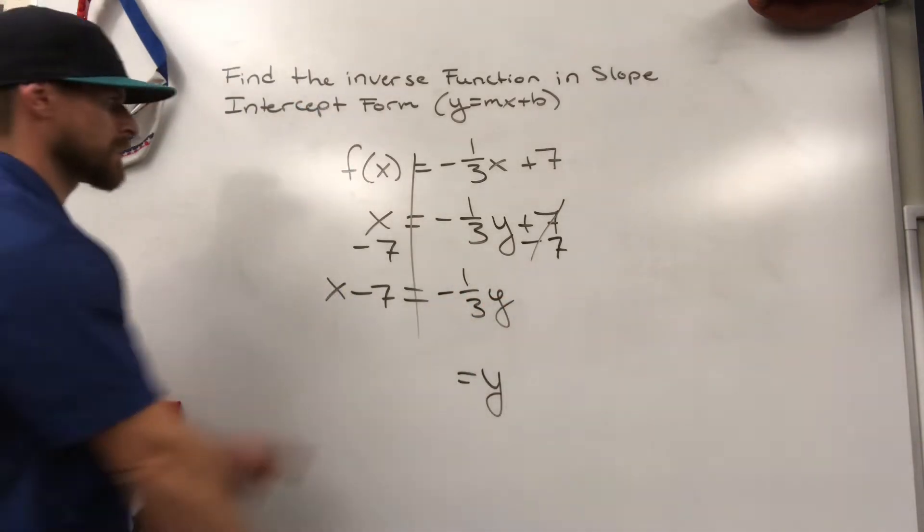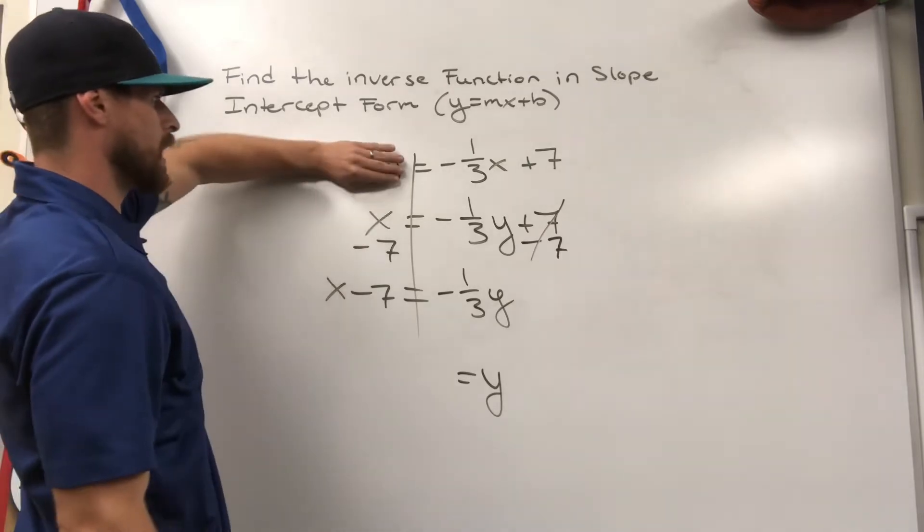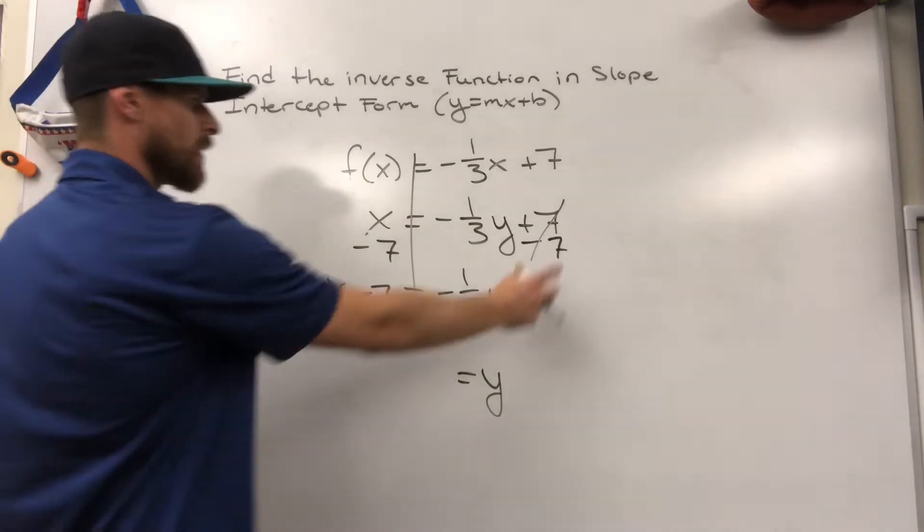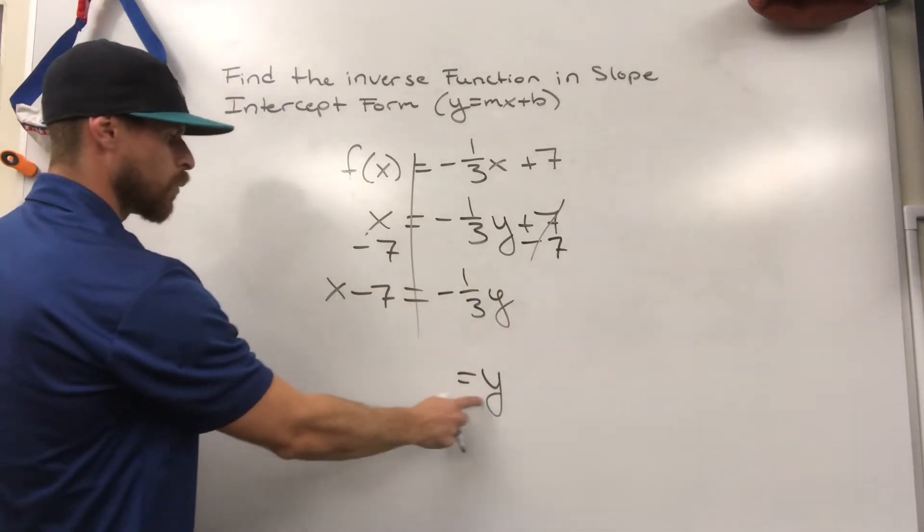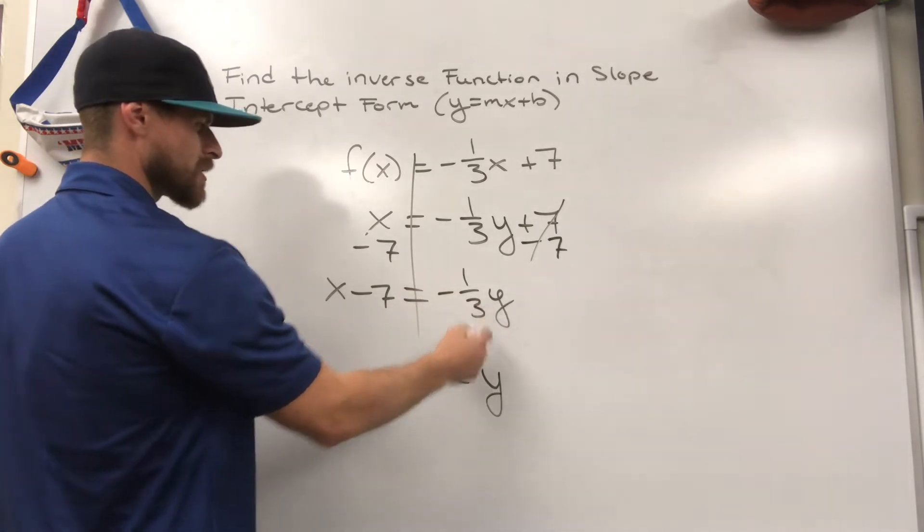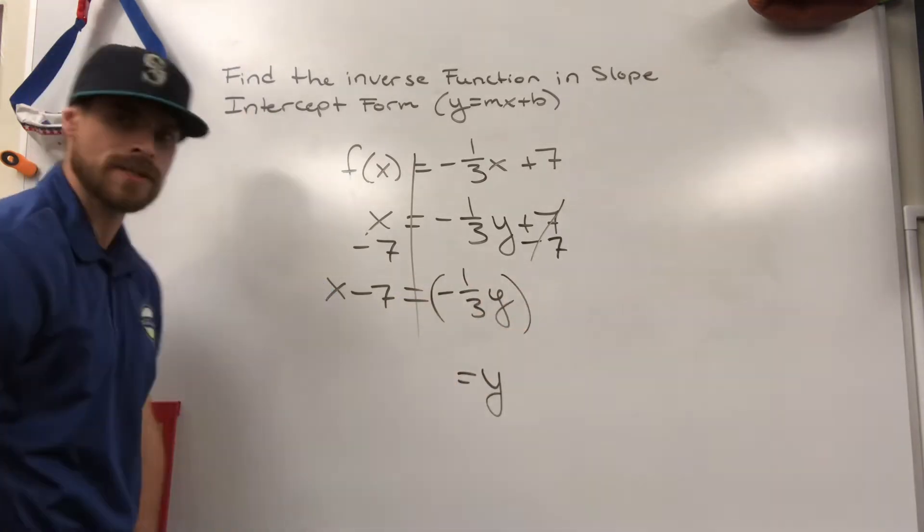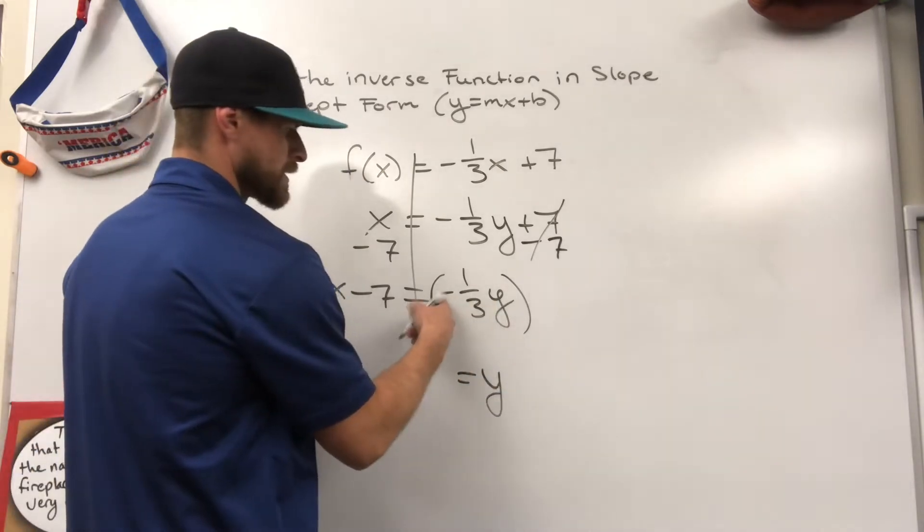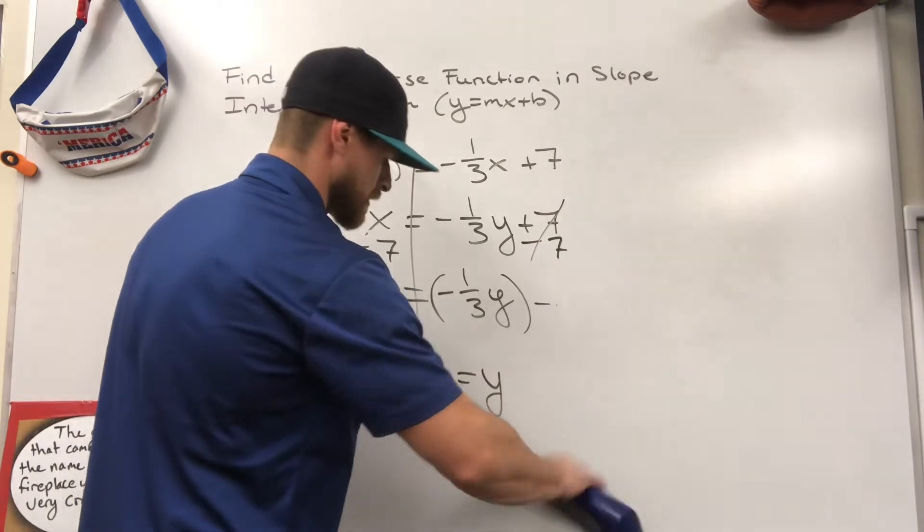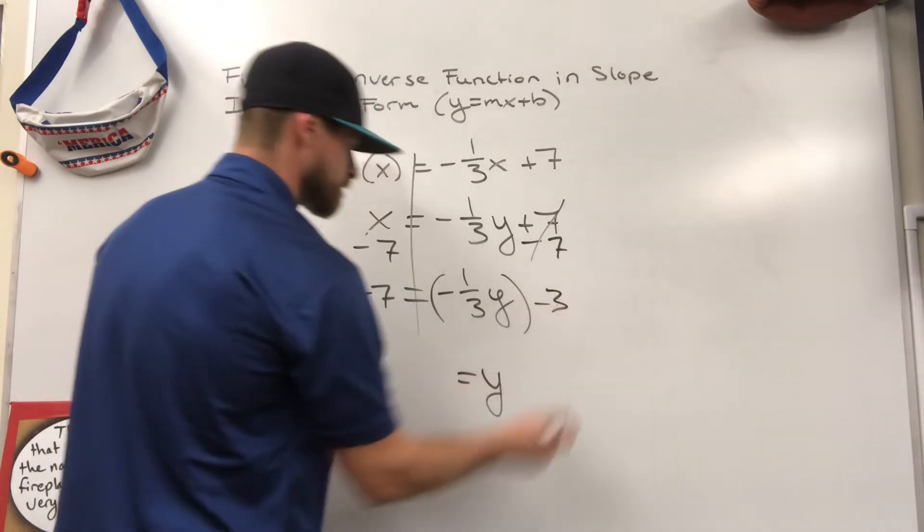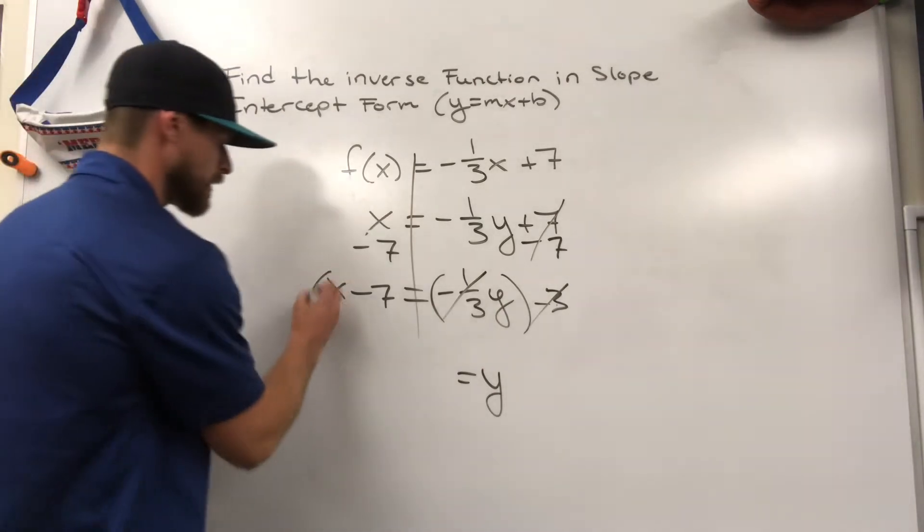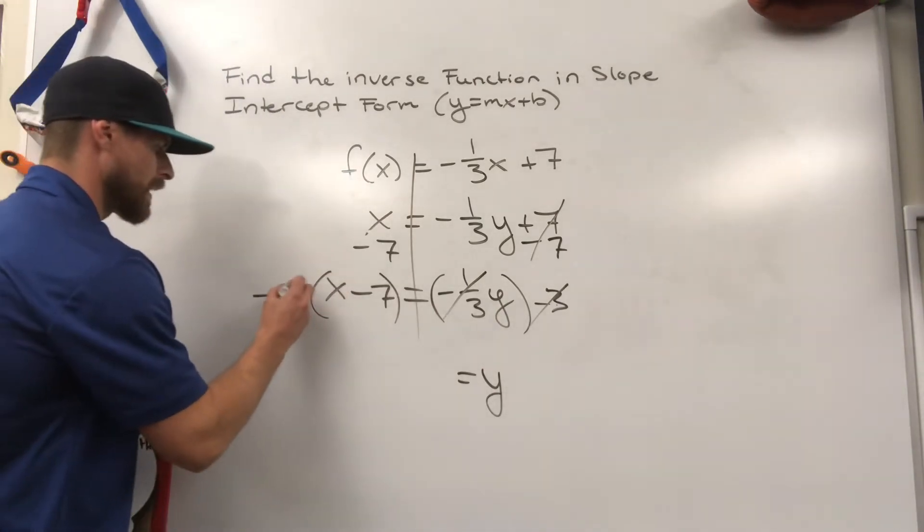So all I've done is I changed f of x into a y, and then I flipped them. Now I'm starting to solve for y. y is equal to, how am I going to get rid of this negative one-third that's attached to the y? We're going to multiply by the reciprocal. The reciprocal is negative three over one, or just negative three. I'd put it like this. Now I know by doing that I'm going to eliminate those two right there like that, but I also need to do it over here on the other side, multiply by three.